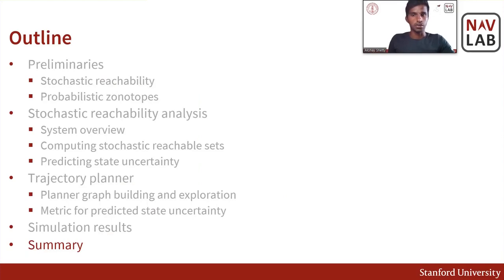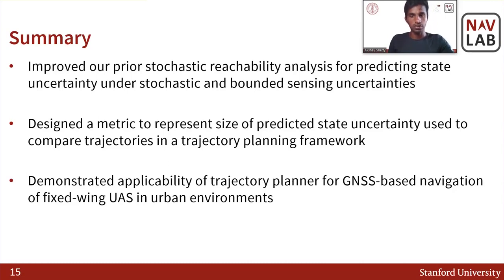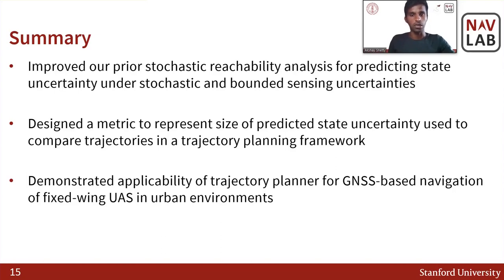Finally, here is the summary of our work. First, we improved our prior stochastic reachability work for predicting state uncertainty under stochastic and bounded sensing uncertainties. Next, we designed a metric to represent the size of the predicted state uncertainty, which was used to compare trajectories in the planning framework. And finally, we demonstrated the applicability of the planner for GNSS-based navigation of fixed-wing UAS in urban environments. Thank you.